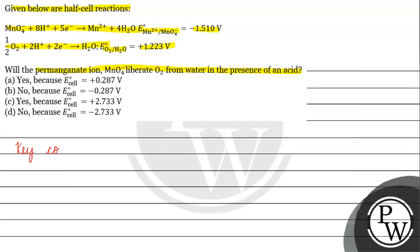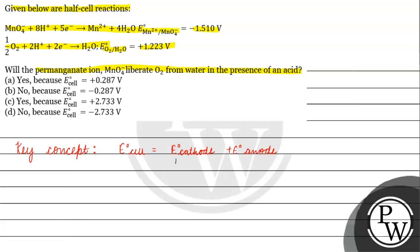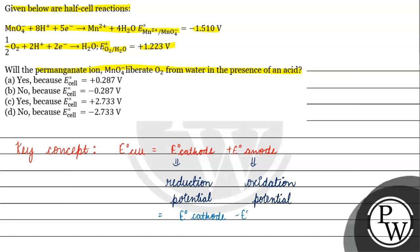The key concept for this question is: we have a cell which is basically formed by a cathode and an anode. We have E0 of cathode and E0 of anode. In the cathode we have a reduction potential, and E0 of anode also plays a role.